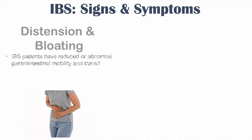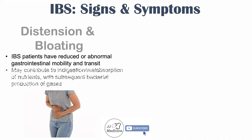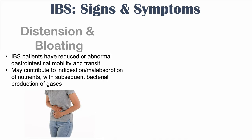Some other relatively common signs and symptoms of IBS include distension and bloating. IBS patients have been found to have reduced or abnormal gastrointestinal motility and transit. This may contribute to indigestion or malabsorption of certain nutrients, which are eventually metabolized by bacteria that produce gases. However, some patients don't actually have more gas — they just feel more sensation of gas or are less tolerant to having gas in their gastrointestinal system.